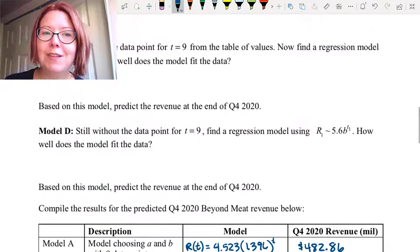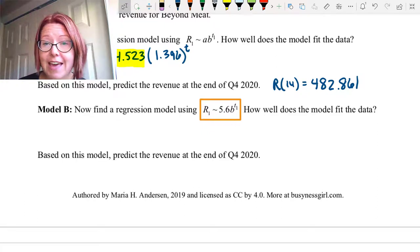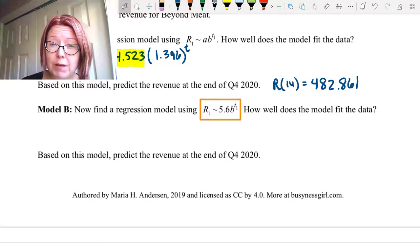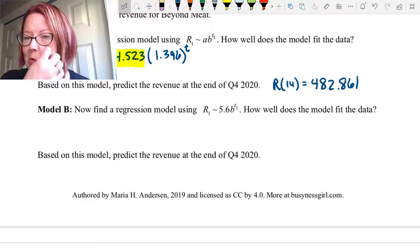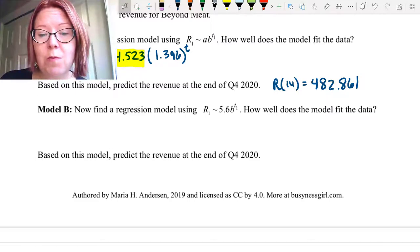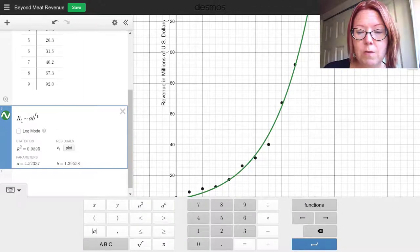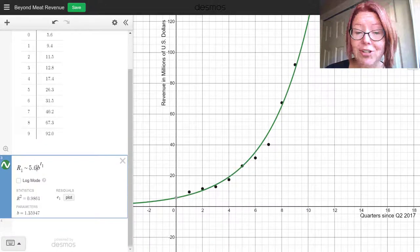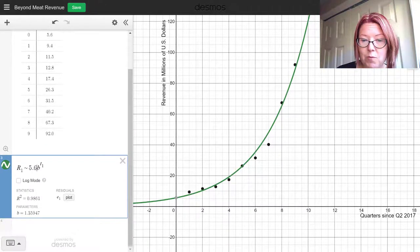Okay, let's move on to the second model. In the second model, we're going to force the initial value to be correct. So rather than leaving A as a parameter to be decided by the model, we're going to put in 5.6 and then see how well the model fits the data and see what that model is. So let's go over to Desmos and just make that one change. So in my Desmos model, I'm going to backspace over A and write 5.6.